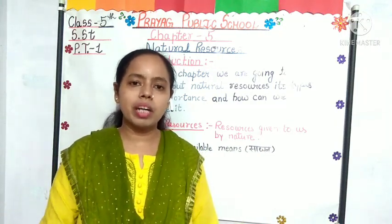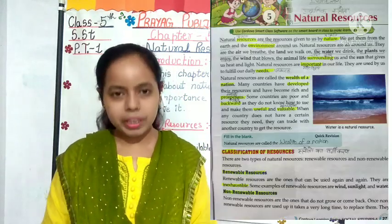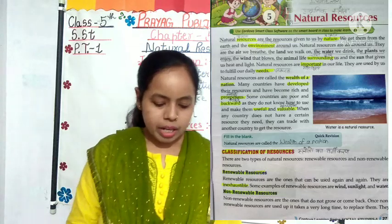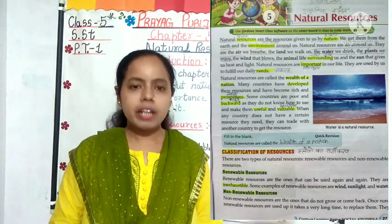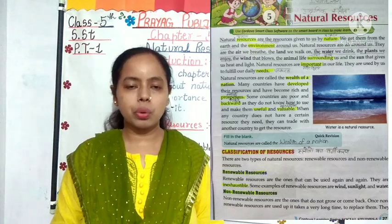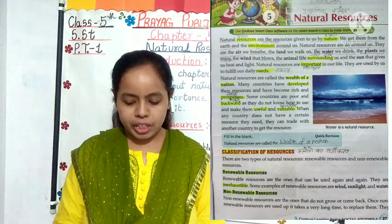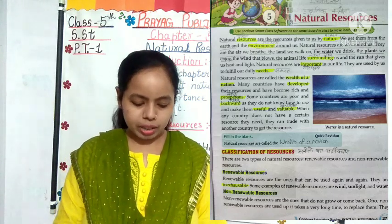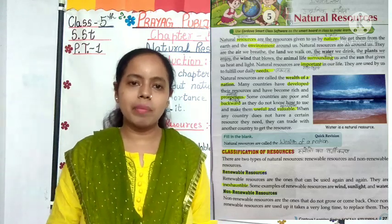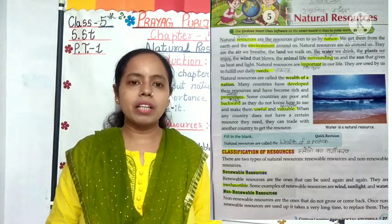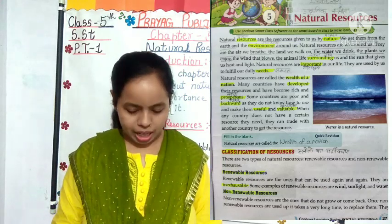Now let's start our chapter. Take your book, open chapter number 5 Natural Resources, page number 27. Natural resources are the resources given to us by nature. Natural resources, or Prakritik Shrota, are given to us by nature or Prakriti. We get them from the earth and the environment around us — from the earth and the Vatavaran, Paryavaran, that surrounds us.